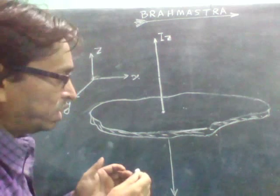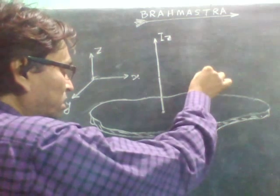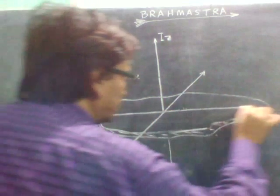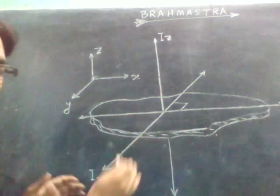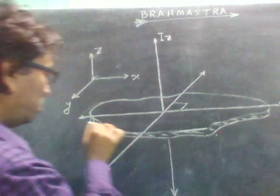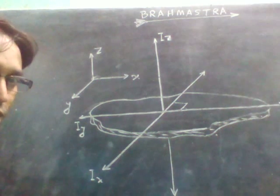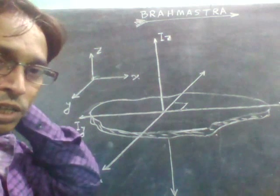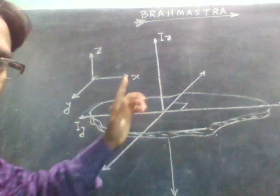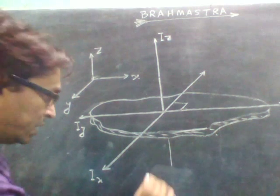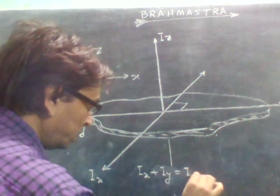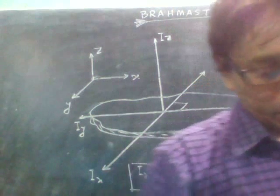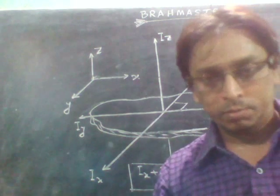If the body is symmetrical about its X axis and Y axis, then we can take two axes — one is I_X and another, perpendicular to this and also symmetrical dividing the body symmetrically, is I_Y. The axis going perpendicularly from the cross-section point is I_Z. So we can write I_X plus I_Y equals I_Z. This can be applied for a body which is symmetrical about its plane and has two planes of symmetry.